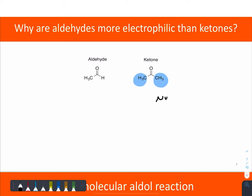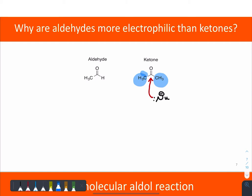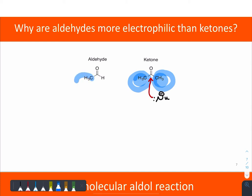The approach or collision with a nucleophile is going to be hindered by those groups. And the larger those groups get, the more steric hindrance there's going to be. Whereas the aldehyde only has the one group next to it, plus a teeny tiny little proton.